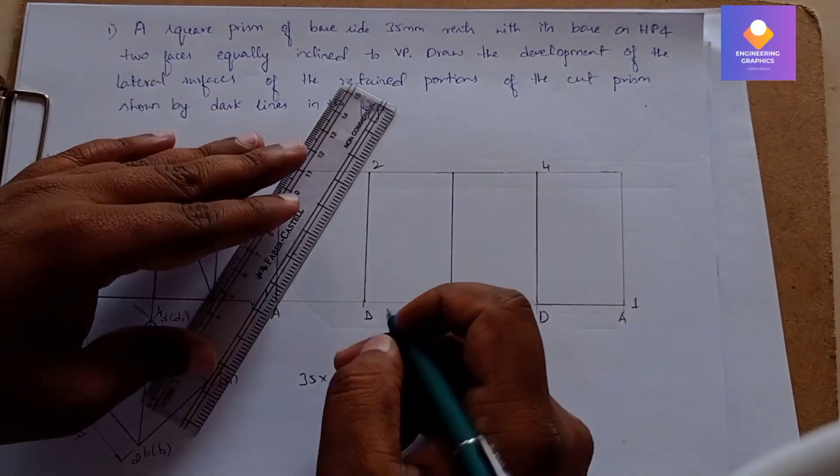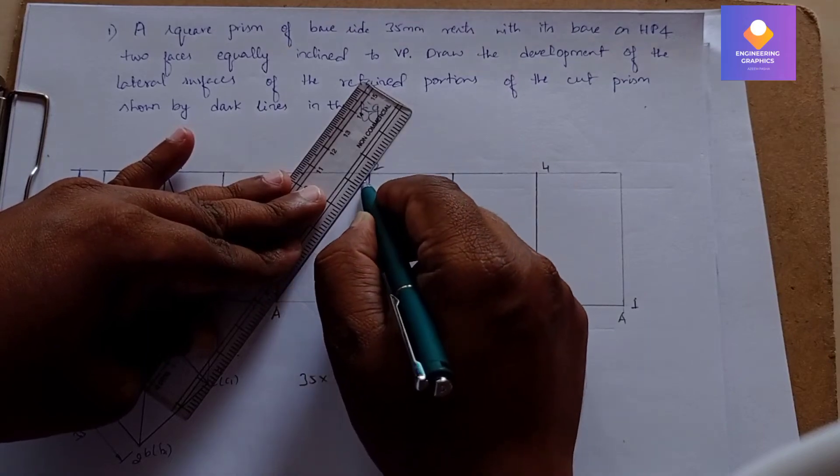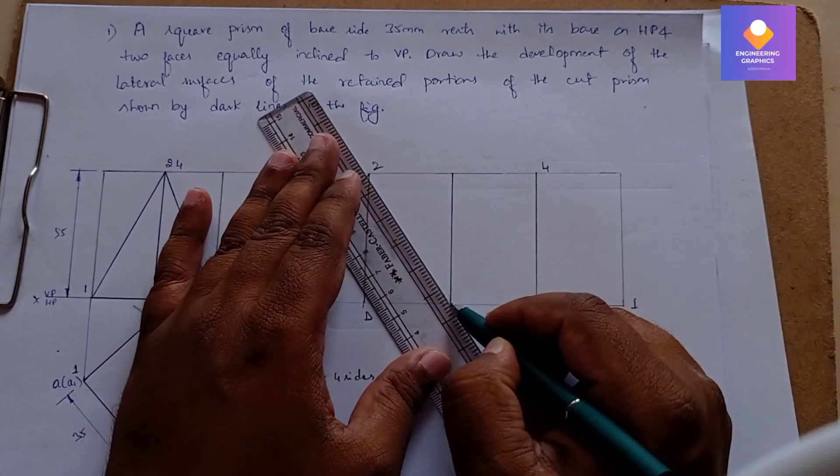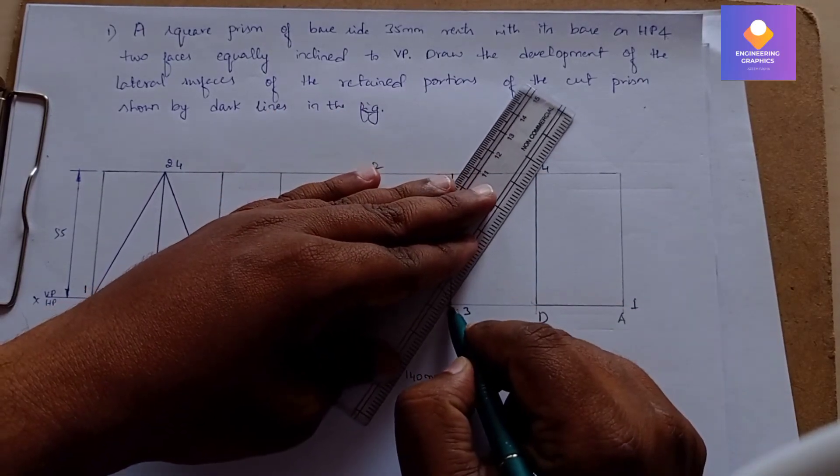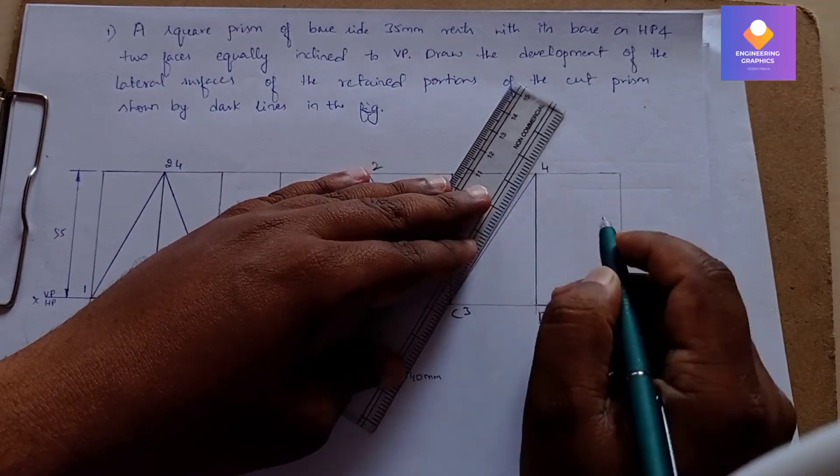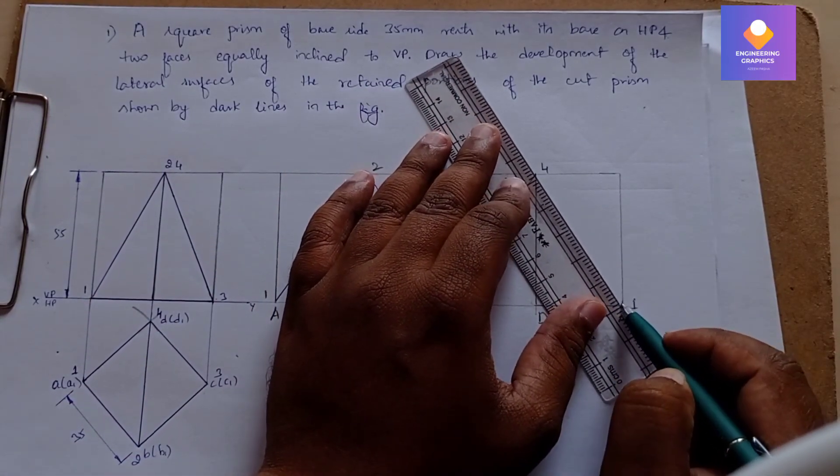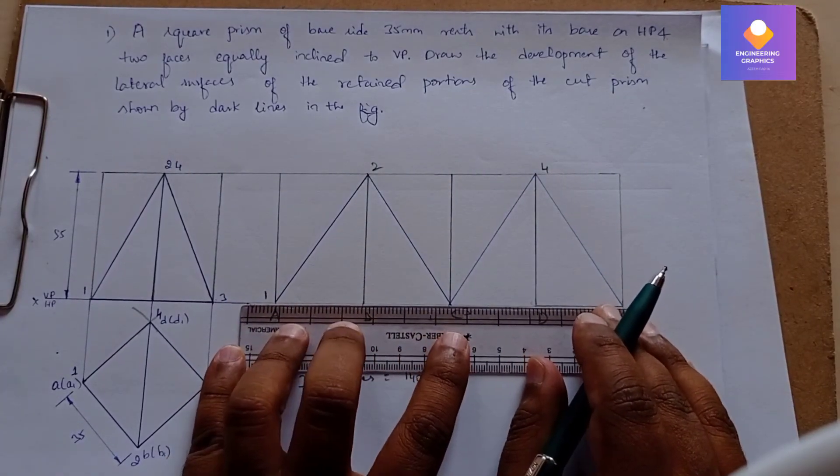We join them with straight lines. The cut portion we need to show with dark lines, so that's why I'm using the pen here. You need to darken this. This is the development of the cut portion of the prism.